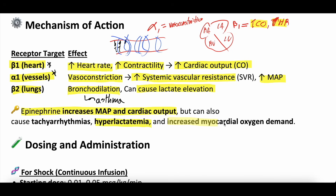When it comes to mechanism of action, epinephrine increases the MAP through the alpha-1 receptor and increases cardiac output through the beta-1 receptor, but it can also cause hyperlactatemia. It increases myocardial oxygen demand because of that beta-1 effect, making the heart squeeze harder, and it increases the risk of tachyarrhythmias like atrial fibrillation and SVT because of that beta-1 chronotropic effect — good things, but also a more robust side effect profile.